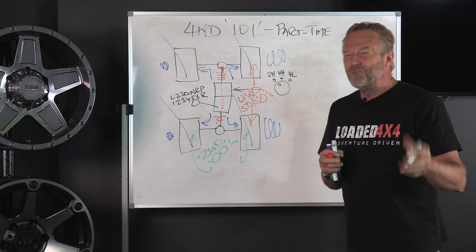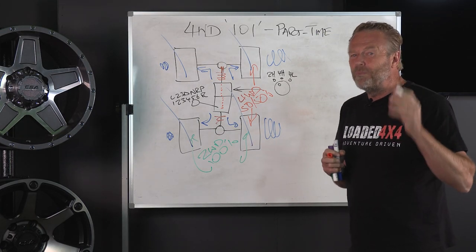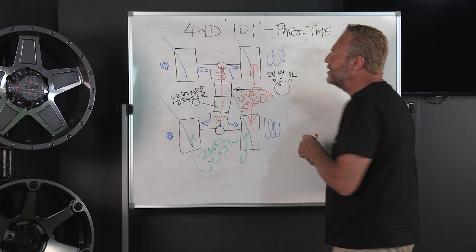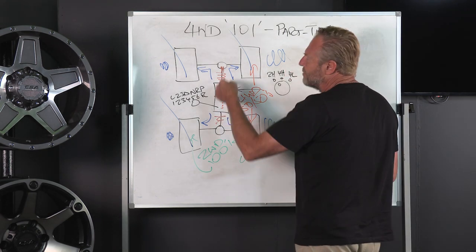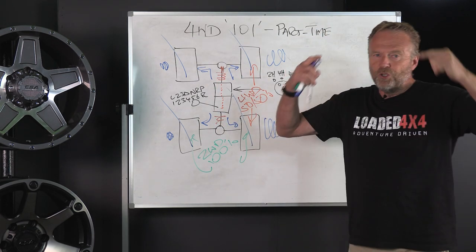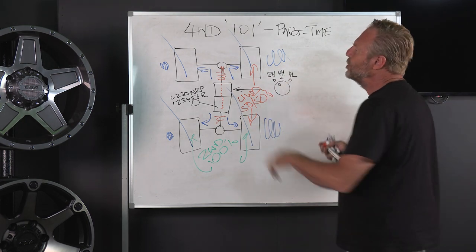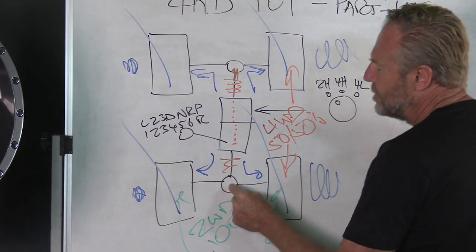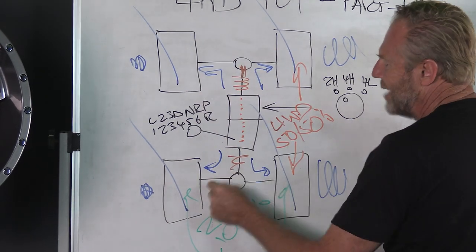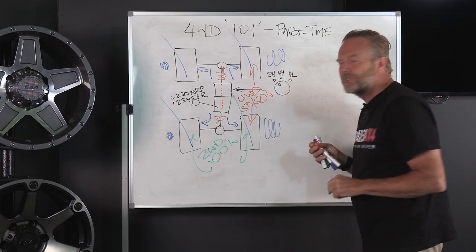The reason for that is that those prop shafts are now joined and being told to turn over at the same speed. In turn, they are wanting to drive each differential and each axle or driveshaft at the same speed.